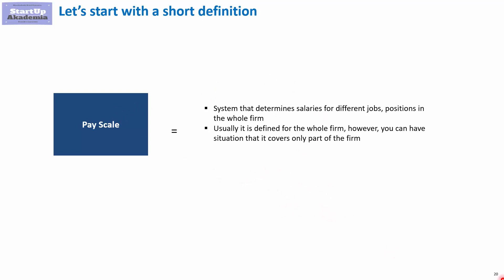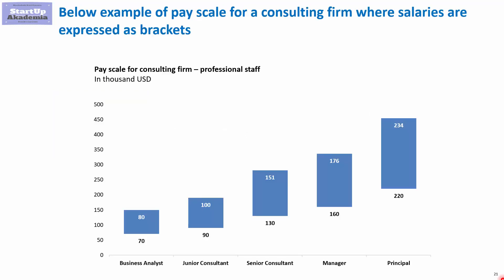Let's look at a few examples. Here we have a pay scale for a consulting firm, covering only the professional staff. The positions shown are: Business Analyst, Junior Consultant, Senior Consultant, Manager, and Principal. We show brackets indicating how much each position can earn — a Business Analyst earns from 70 to 80,000 per year, Junior Consultant 90 to 100,000, Senior Consultant 130 to 151,000, and so on.